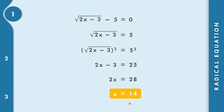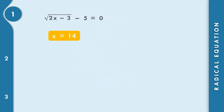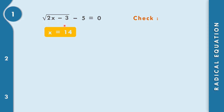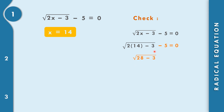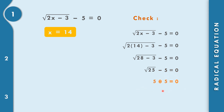Let us check if x equals 14 is the solution. Substituting into the original equation: square root of 2 times 14 minus 3, minus 5 equals 0. That is square root of 28 minus 3, which is the square root of 25, equals 5. Then 5 minus 5 equals 0, and 0 equals 0. So x equals 14 is the solution set.